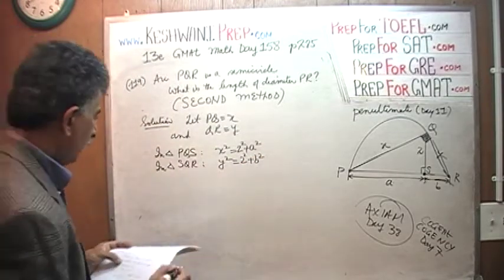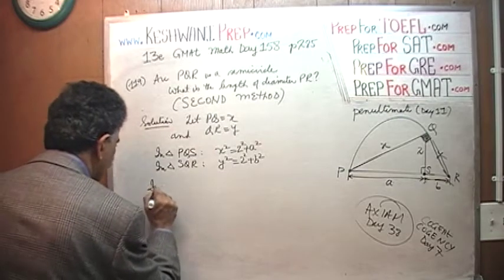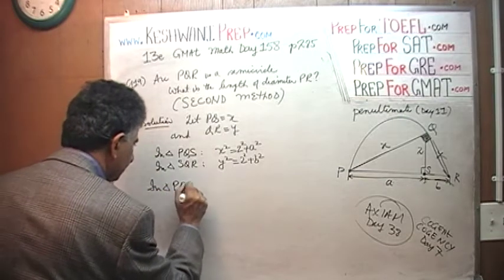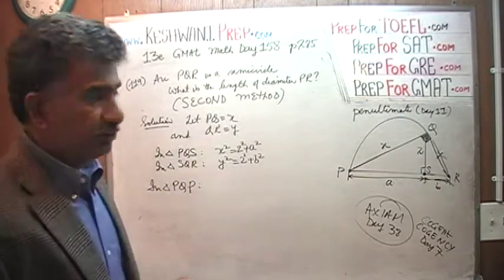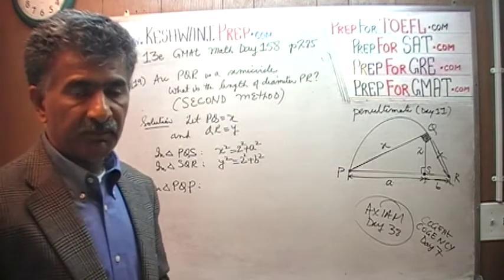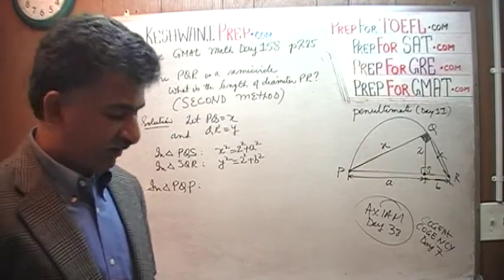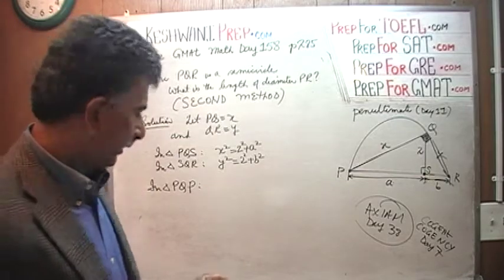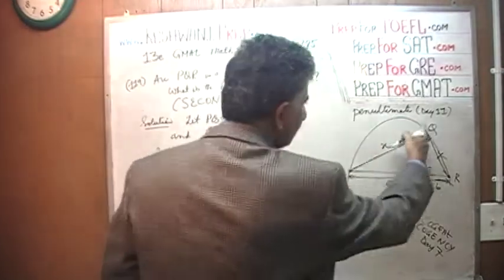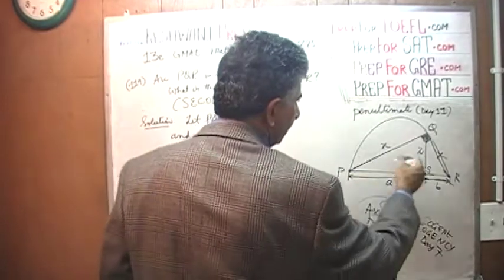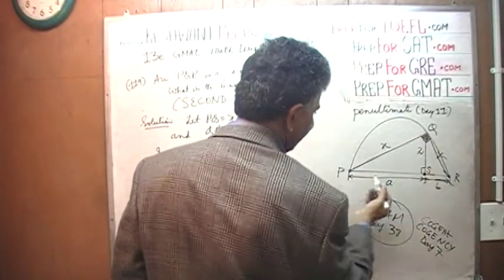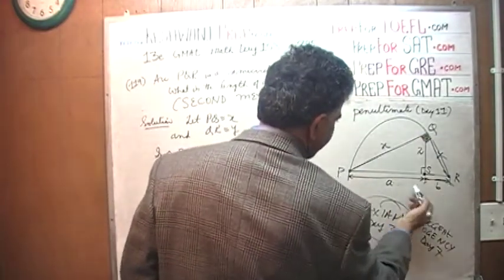In triangle PQR, if you have not watched day number 156, it might be a good idea to watch that video also, because a lot of the things are similar and I am not going into too much detail right now. In triangle PQR, which is a large triangle, this being 90 degrees, P to R is a hypotenuse which is A plus B.